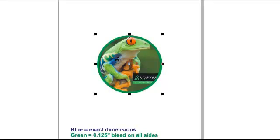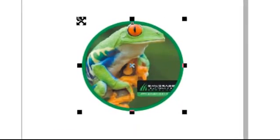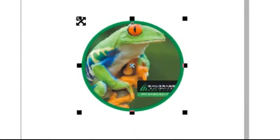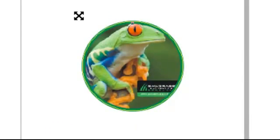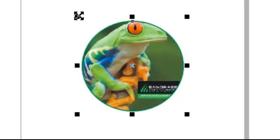The fifth step is to resize the modified image to match the outer green boundary of the template. Hold down the Shift key and left click on one corner of the anchor points. Now drag your mouse to resize, then release.